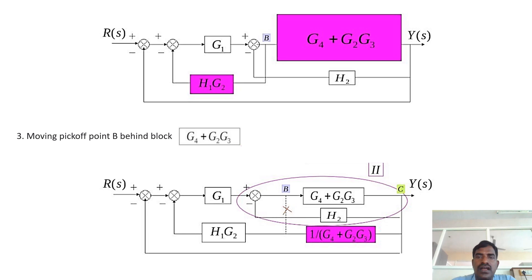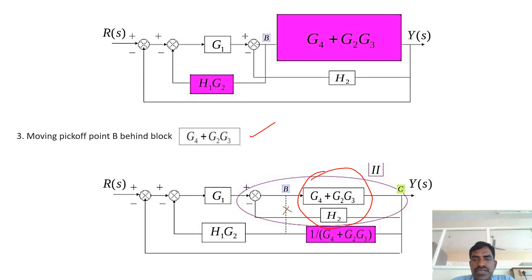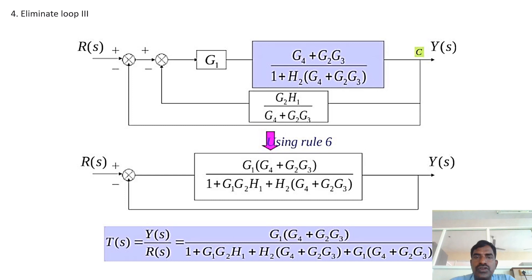The second step is moving pick-off point B behind the block. Now we remove this loop. The loop is G2·(G4 plus G2·G3) with H2 as the feedback. We know the equation for reducing the loop: positive feedback gives G by (1 minus GH), and negative feedback gives G by (1 plus GH). After removing the loop, we get G4·G2 and G4·G2·G3 divided by 1 plus H2·(G4·G2 plus G2·G3).